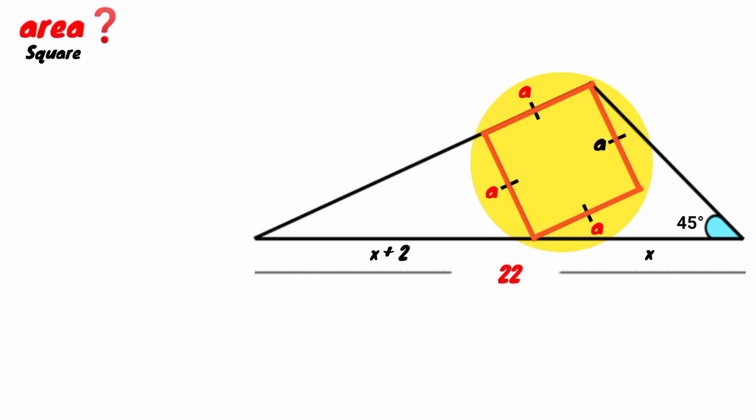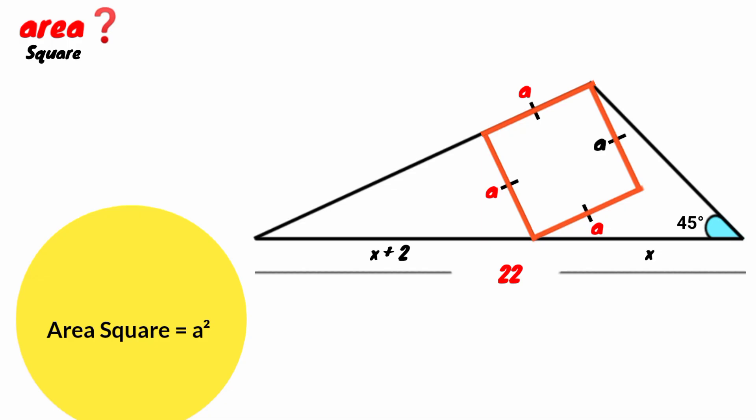It is very simple. The area of a square is calculated by taking the square of the length of one of its sides, and we have the length to be A. So we can say area of square equal to A squared.